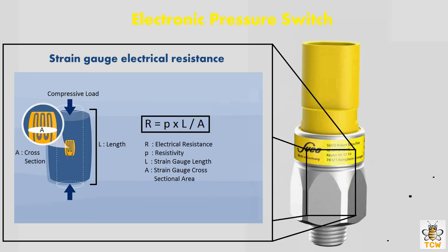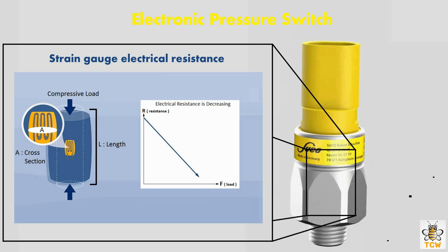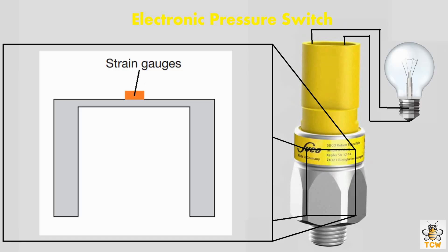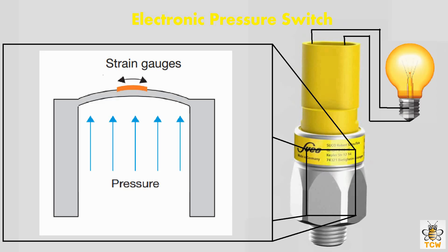The change in electrical resistance is converted into an electric disconnect switch mechanism. When the strain gauge receives a compressive load, its shape becomes shorter and its cross-sectional area increases. According to the strain gauge resistance formula, if the strain gauge becomes shorter and the cross-sectional area increases, then the electrical resistance will decrease. This change in electrical resistance is also converted into an electric disconnect switch mechanism.